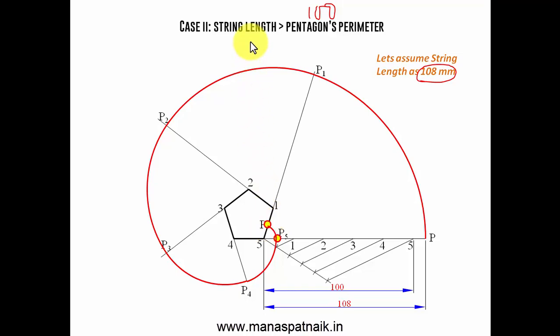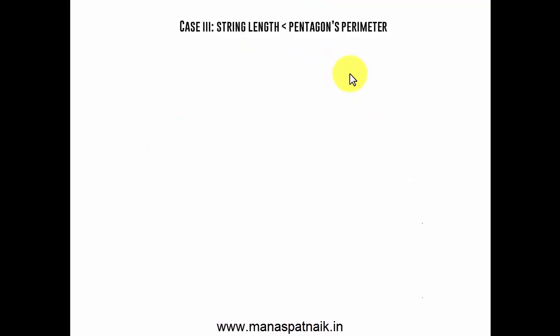So this was the case when string length was more than the pentagon's perimeter. Let's jump over to case number three. String length less than the pentagon's perimeter and in this case it's 8mm less that is 92 millimeters. So let's go ahead and do this again. The same stuff. Five points and let's have a string over here.